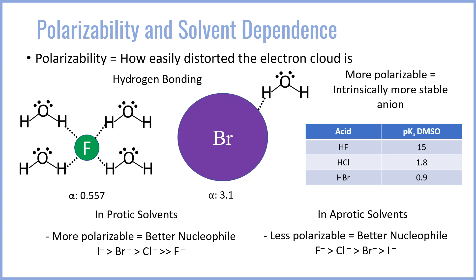In the case of protic solvents, we have to think of what is known as nucleophilic caging — the solvent stabilizes and cages the nucleophile, weakening the smaller nucleophiles more. But in aprotic solvents, the bigger nucleophiles are more stable and happier to stay on their own.